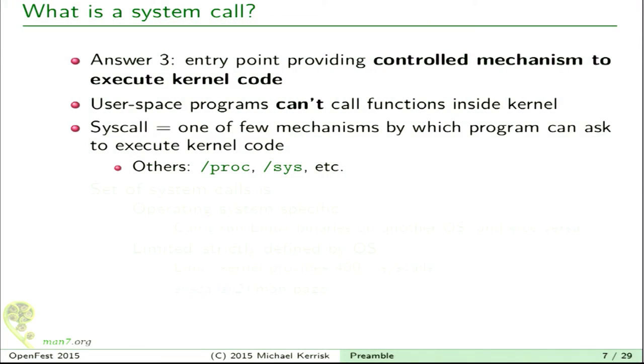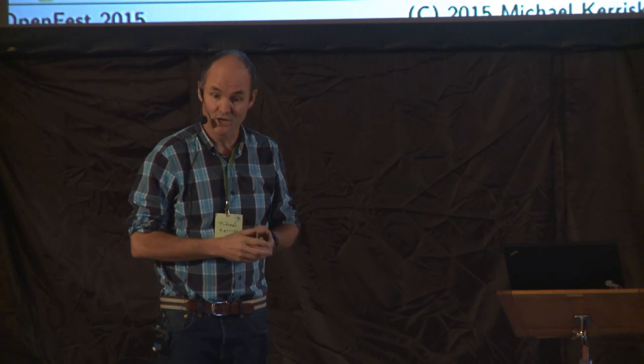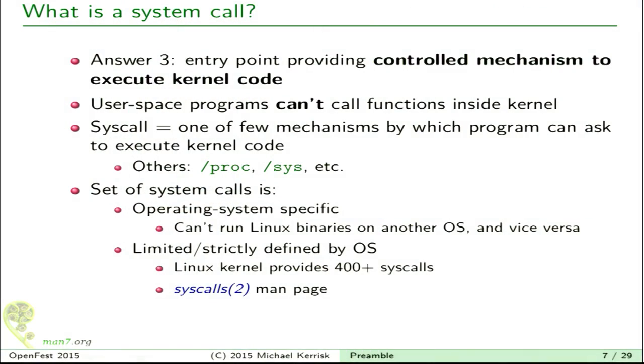A system call is a certain entry path into the kernel's code to do some operation. It's the principal way of getting kernel code executed on your behalf. There are some others as well — things like the /proc file system or the /sys file system. The set of system calls available depends on your operating system. Linux, Mac OS X, and Windows each have completely different sets of system calls, and that's the fundamental reason why you can't run a Windows program on Linux or vice versa.